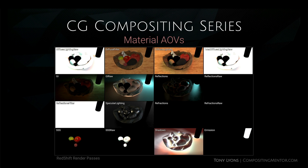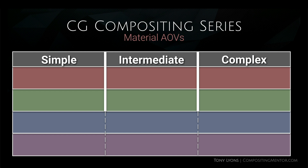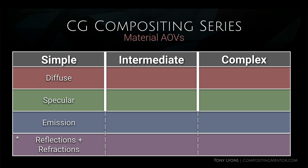Here's an overview of all the material AOV render passes you'd find in the Redshift fruitball render. There seems like a lot of passes here, but you actually don't need to use all of them. There are different levels of complexity, and depending on your comp, you might need to make an overall change or get deeper into the nitty-gritty to change some deeper level aspects. There are different levels of complexities that you could rebuild the material AOVs in.